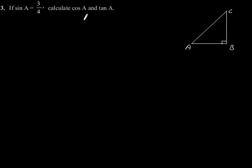To calculate cos A and tan A, let us consider a right angle triangle ABC which is right angled at point B.